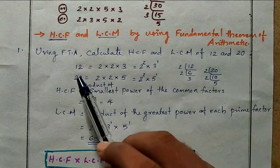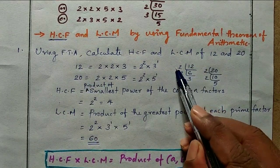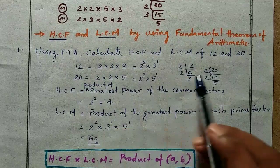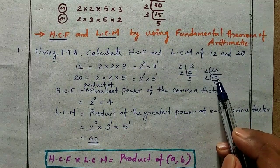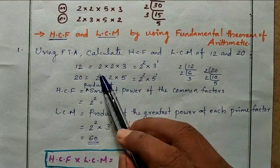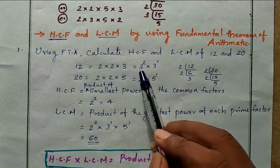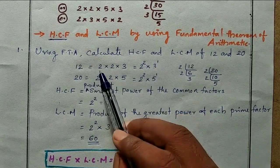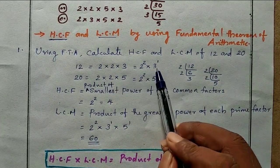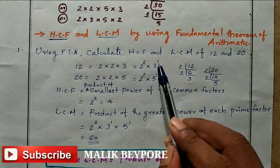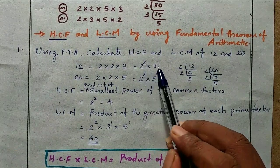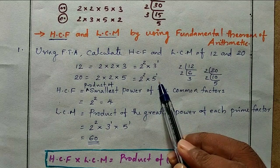First, we write the prime factorization of each number. 12: divide by 2 to get 6, divide by 2 to get 3. So 12 = 2 × 2 × 3 = 2² × 3¹. For 20: divide by 2 to get 10, divide by 2 to get 5. So 20 = 2 × 2 × 5 = 2² × 5¹.